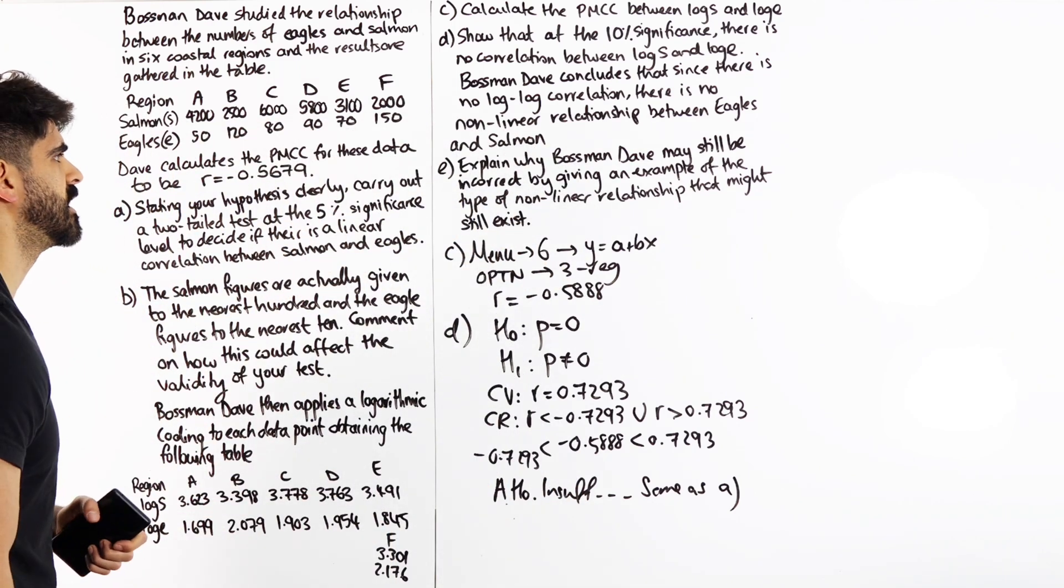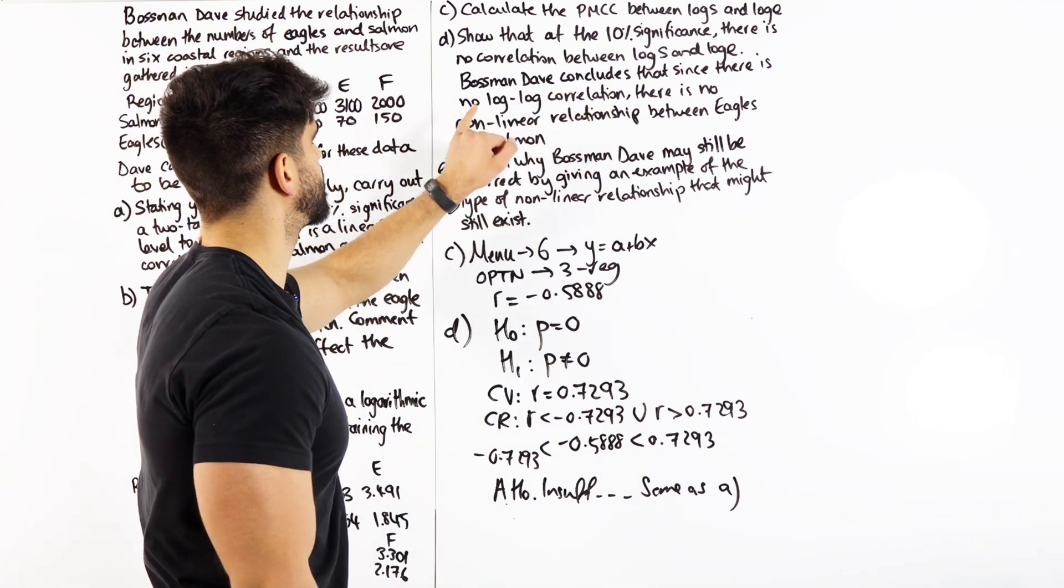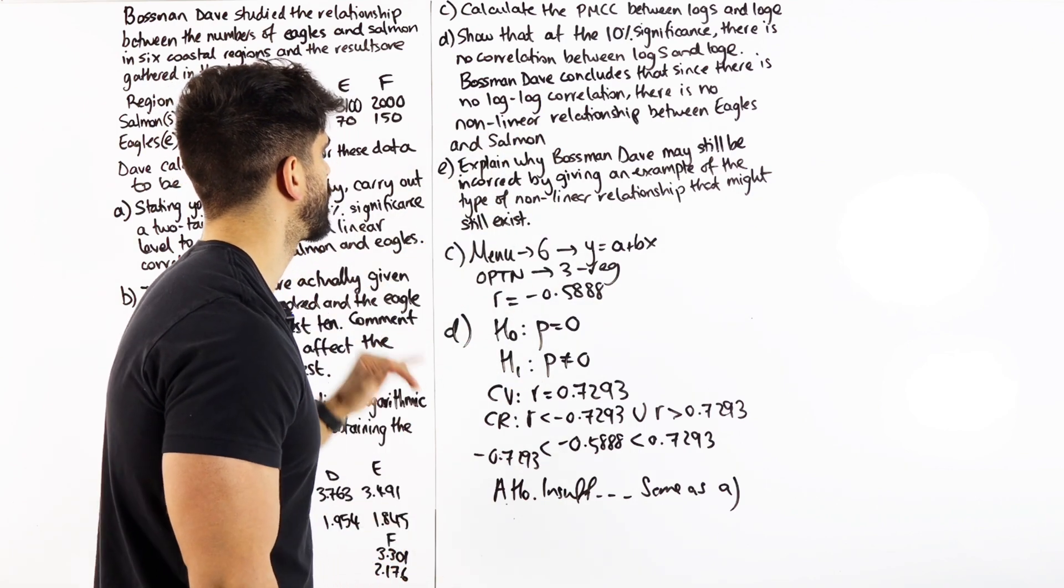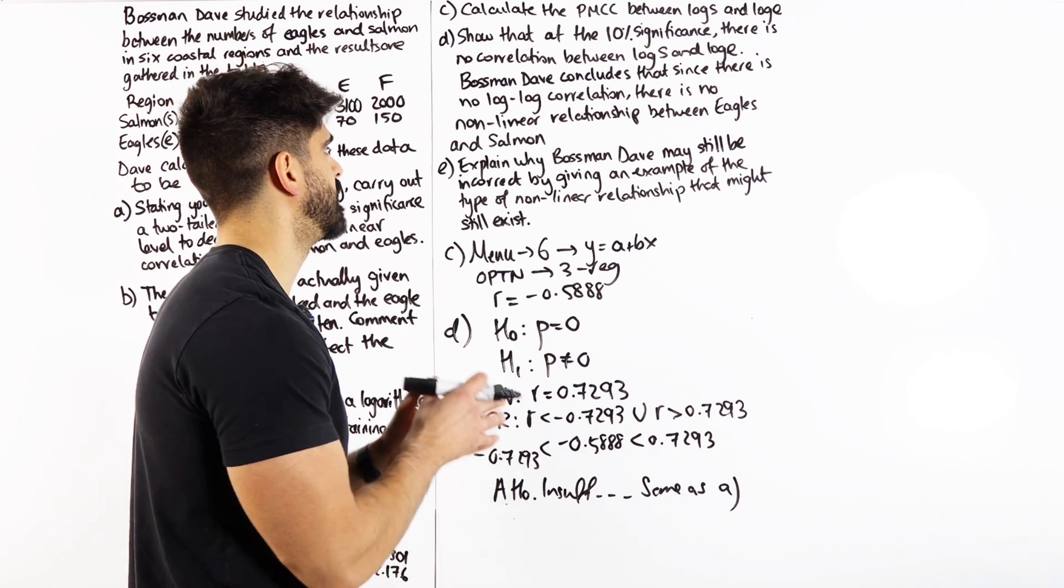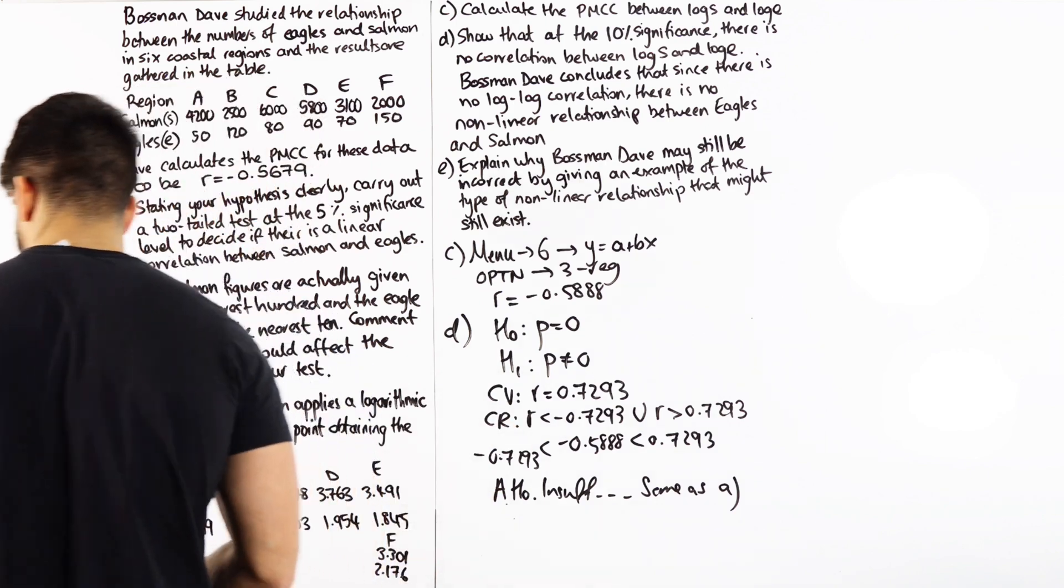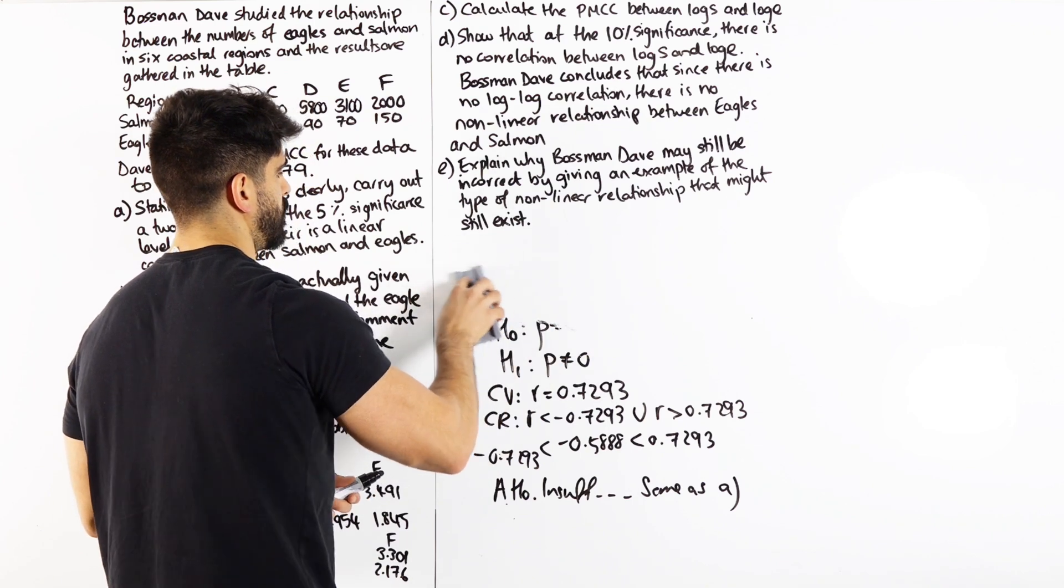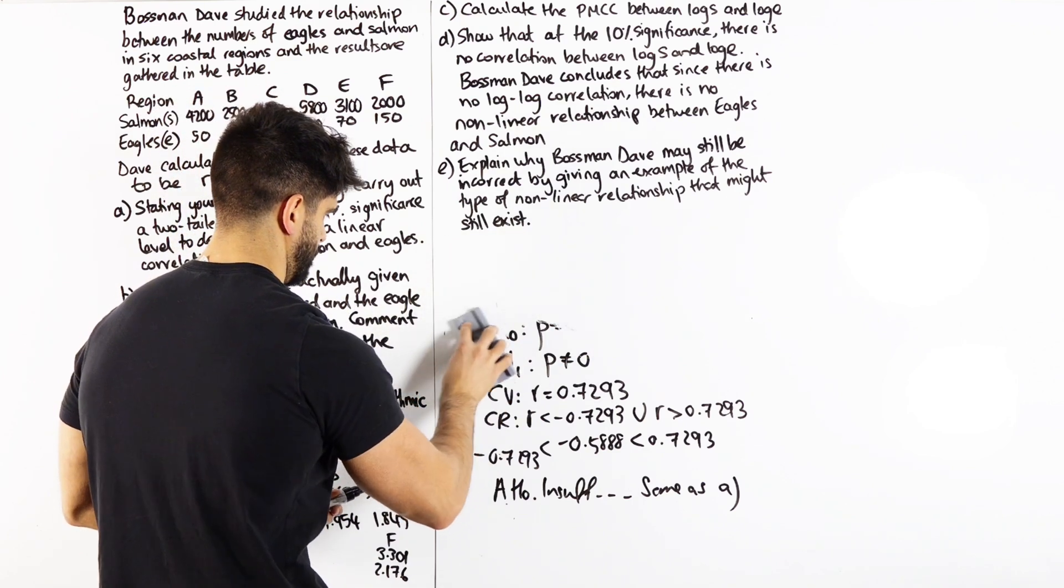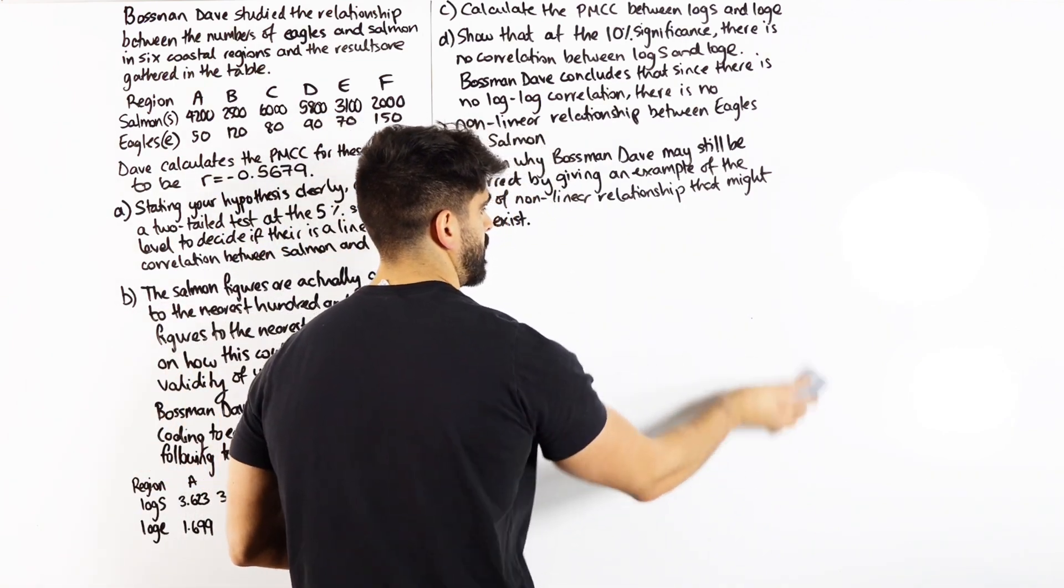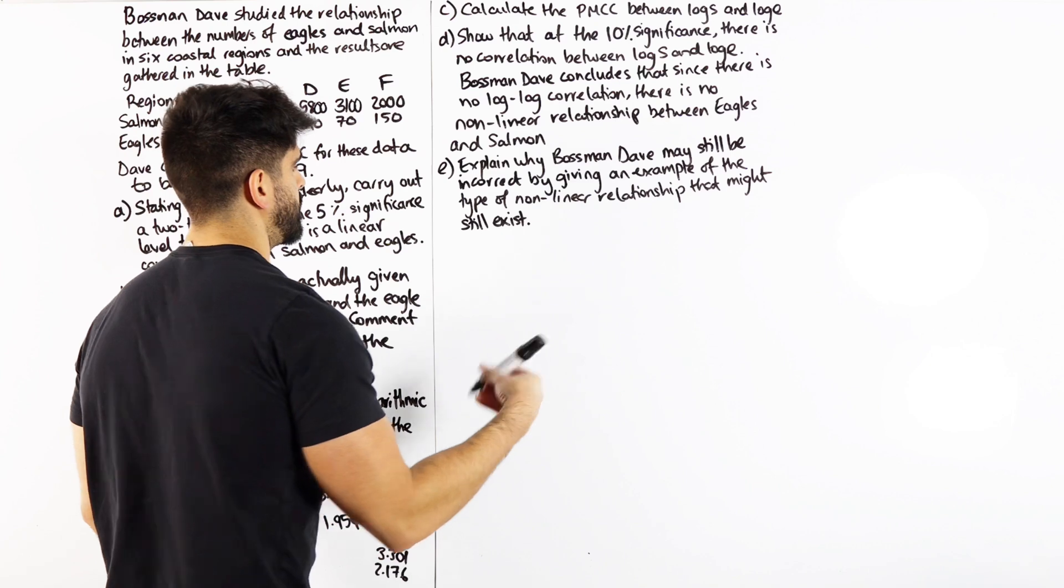Now finally, part E says, explain why Bossman Dave may still be incorrect by giving an example of the type of non-linear relationship that might still exist. So for this, I'm going to revise very quickly what we learned in year 12 and that is non-linear relationships and how that affects what type of graph you're looking at. Now, when both axes have been logged it's a polynomial type.